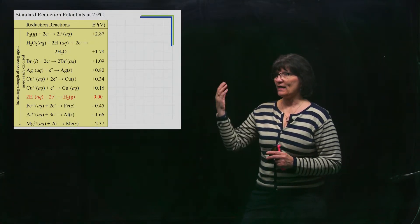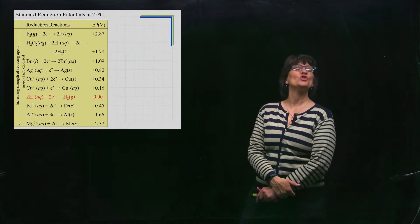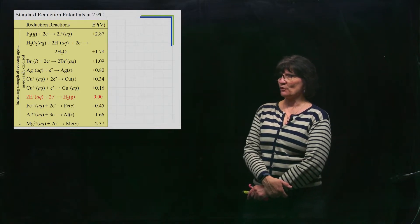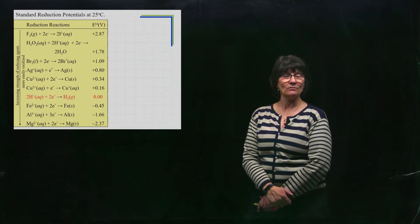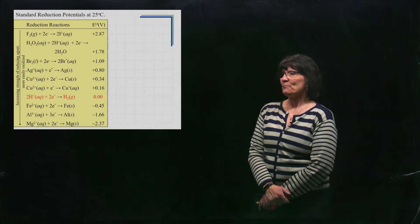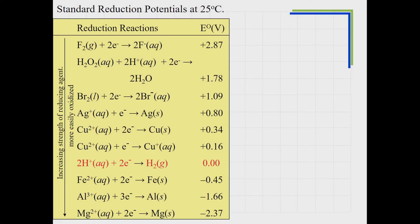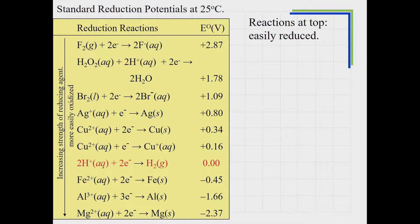Let's look at an excerpt from a standard reduction potential table. The red entry is the standard hydrogen electrode, written as a reduction and assigned a value of zero volts. Everything above it would run as reductions if hooked up to the hydrogen electrode. Anything below it would run as an oxidation, because overall reactions have to have a positive voltage to run spontaneously.